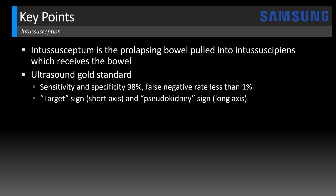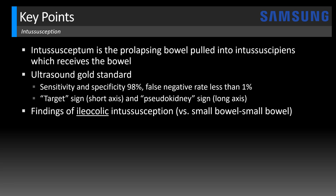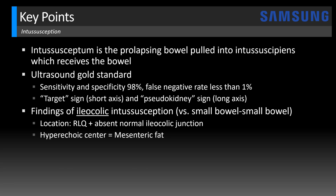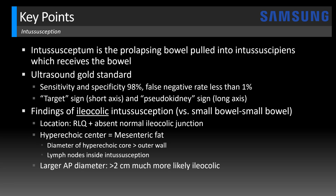Typical findings include a targetoid appearance viewed on short axis with concentric rings, and on long axis it may mimic the appearance of a kidney, yielding the pseudokidney sign. More specific findings allow us to differentiate ileocolic from small bowel-small bowel intussusception. The most obvious is location — ileocolic intussusceptions tend to occur in the right lower quadrant and we won't see a normal ileocolic junction. These also have a hyperechoic center representing mesenteric fat, and if the diameter of the hyperechoic core is greater than the outer wall, that's more suggestive of ileocolic type. Lymph nodes may also be included inside an ileocolic intussusception.